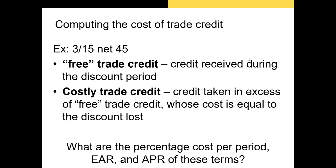Now let's calculate the cost of trade credit. Trade credit comes with terms like 3/15 net 45. This means the buyer has 45 days to pay what they owe to their supplier, but if they pay within the first 15 days, they get a 3% discount. The credit received in the 15-day window is called the free trade credit, while credit taken beyond that is called costly trade credit — because its cost equals the discount lost when the buyer doesn't pay within the 15-day window.